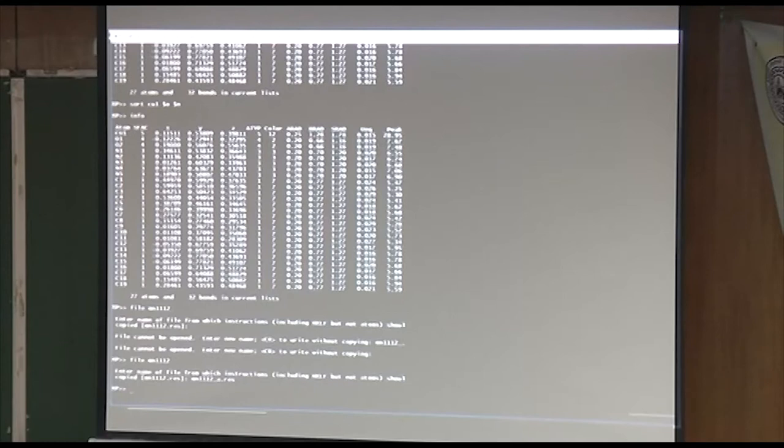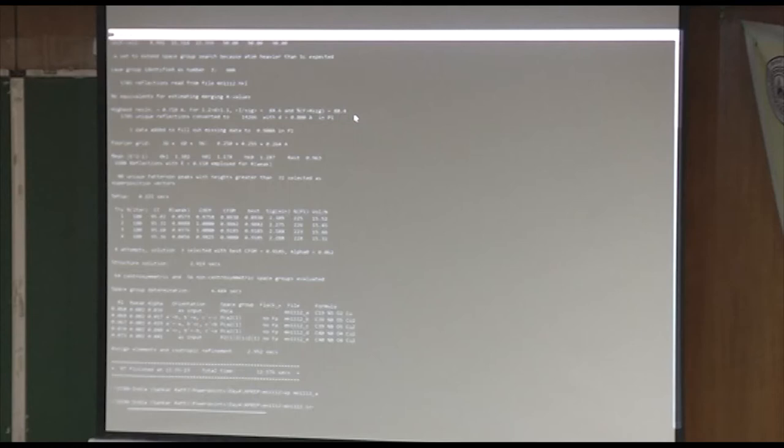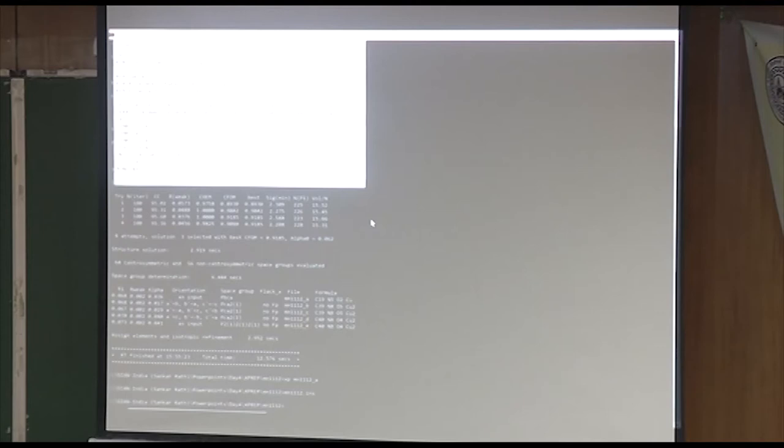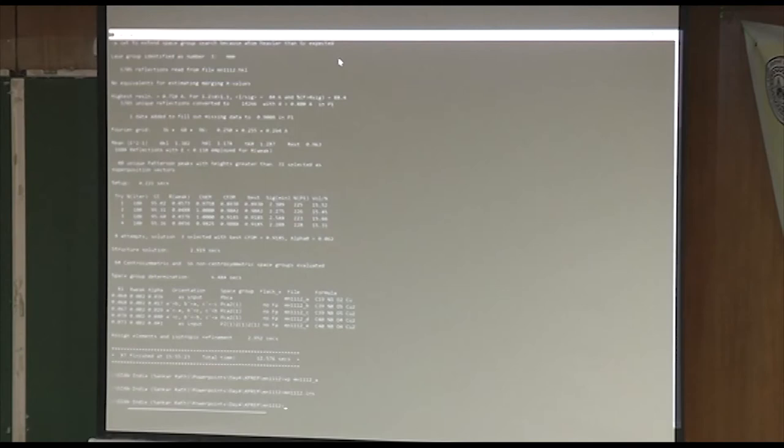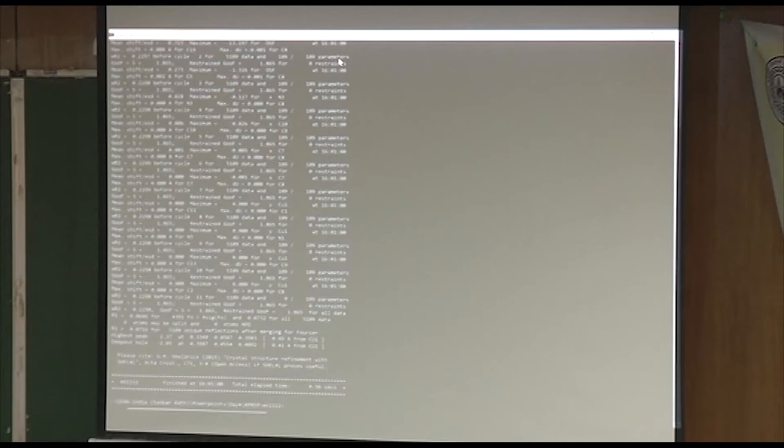Let me show you what the INS file looks like now. It's just what it was before, except it has added LS 10, BOND $H, LIST 6, FMAP 2, and PLAN 20. So FMAP 2 means calculate difference map, PLAN 20 says give me the top 20 peaks. You see this FVAR, that's that scale I was telling you about. This number starts out as one, but it's going to vary as we do a refinement. I just do XL and then the file name.